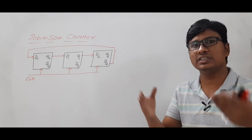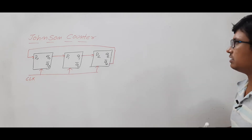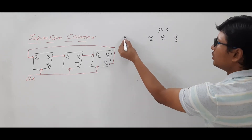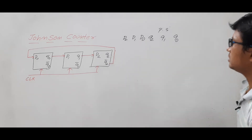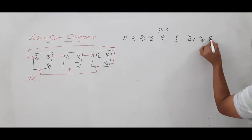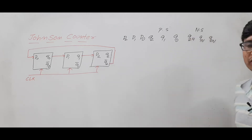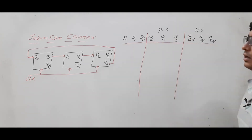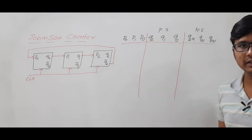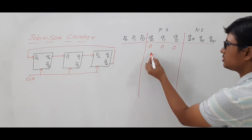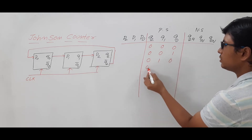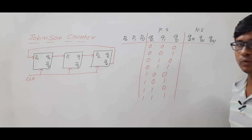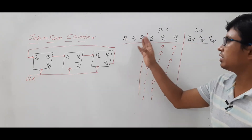To understand what this counter does, we need to find its present state and next state. The present states are Q2, Q1, and Q0, and the D inputs are D2, D1, and D0; the next states are Q2N, Q1N, and Q0N. With three bits, there are eight possible input combinations: 000, 001, 010, 011, 100, 101, 110, and 111.